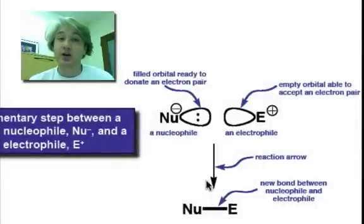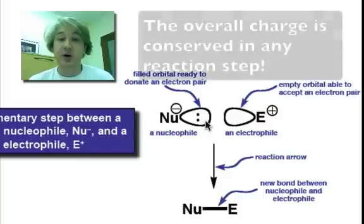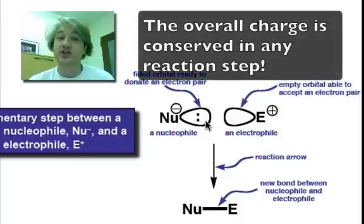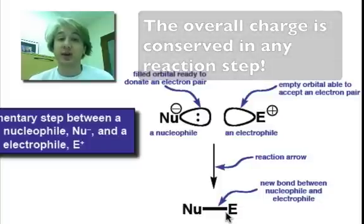Some things to take note of every step of our reactions. First of all, the overall charge does not change from one side of the reaction arrow to the other. The overall charge that we start with, a negative charge in our nucleophile and a positive charge in our electrophile, giving a net charge of zero on that side of the reaction, we also see that in our final nucleophile-electrophile bond shown here. Our net charge has remained the same.